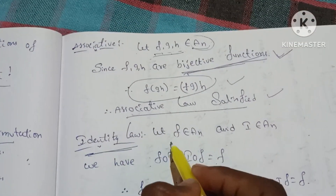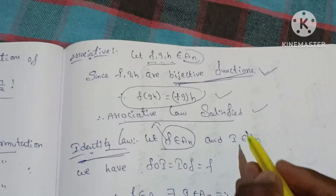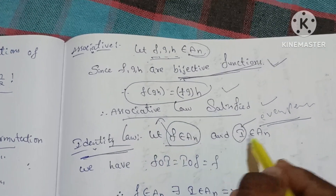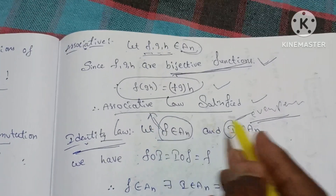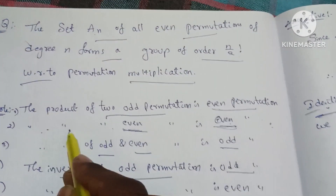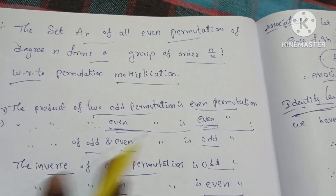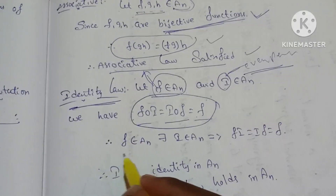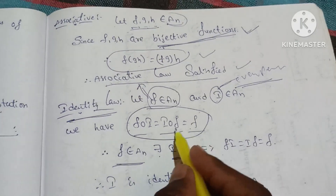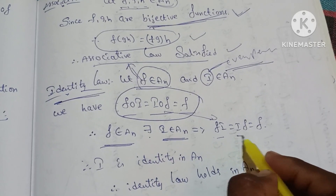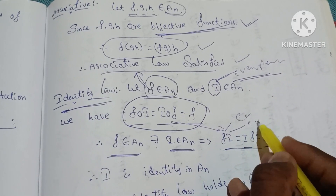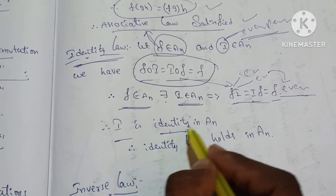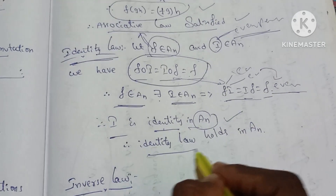Identity: Let f belong to Aₙ. The identity permutation I is an even permutation, so I belongs to Aₙ. The product of two even permutations is an even permutation, so f∘I = I∘f = f. Therefore I is the identity in Aₙ, and the identity law holds in Aₙ.